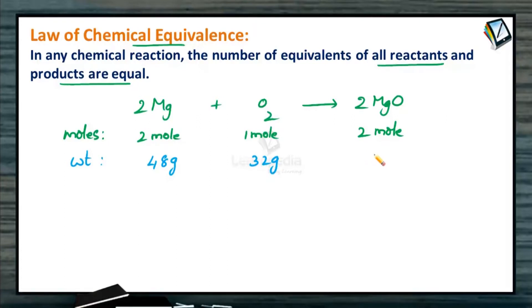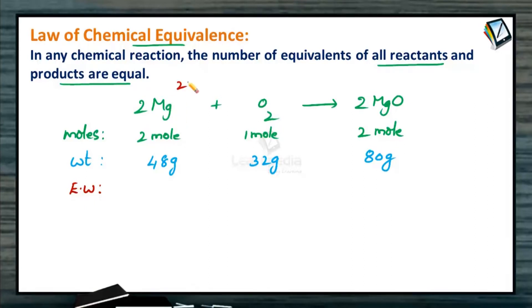In terms of mass: 2 × 24 = 48 grams of magnesium combined with 32 grams of oxygen to give 2 × 40 = 80 grams of magnesium oxide. So what will be the equivalent masses of all these substances? For an element, it is atomic mass divided by its valency. For magnesium: 24 ÷ 2 = 12. For oxygen: atomic mass 16 divided by valency 2 = 8. For magnesium oxide, an ionic compound, its equivalent mass equals formula mass divided by total positive or negative charge.